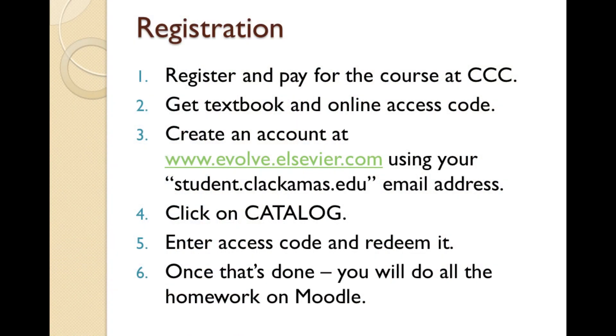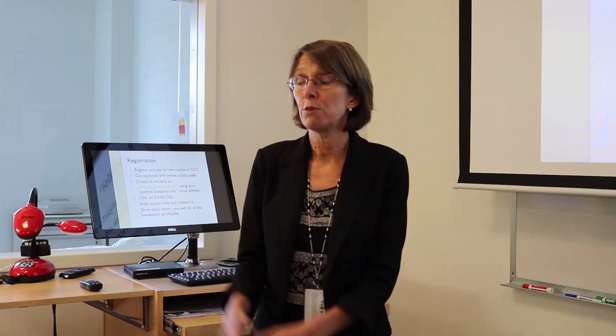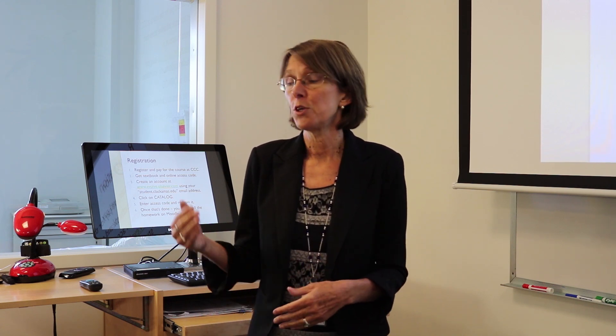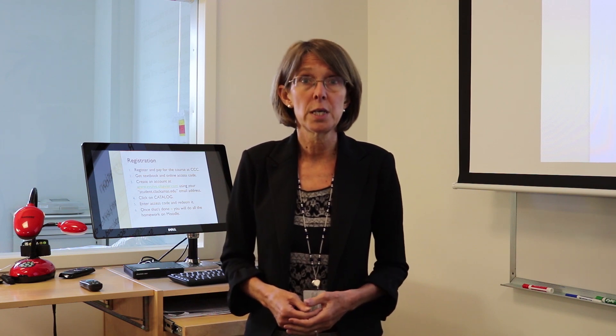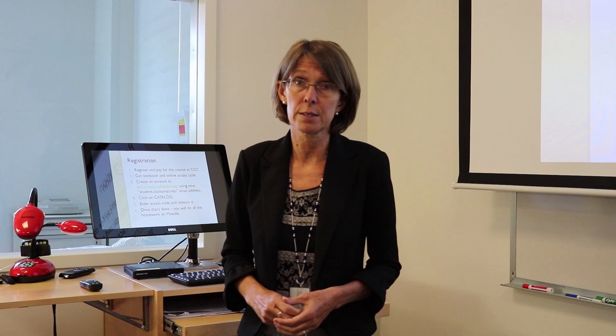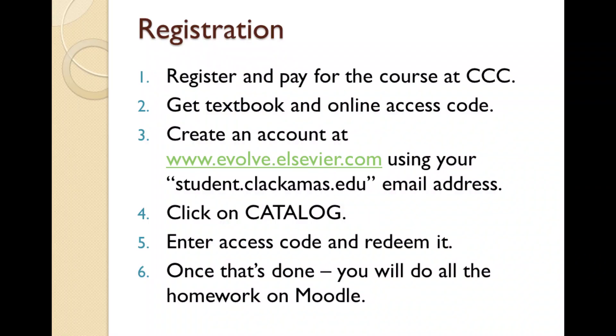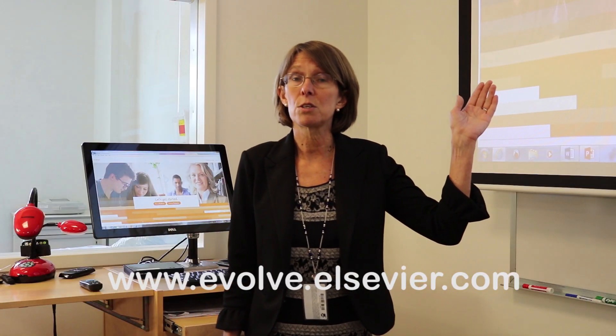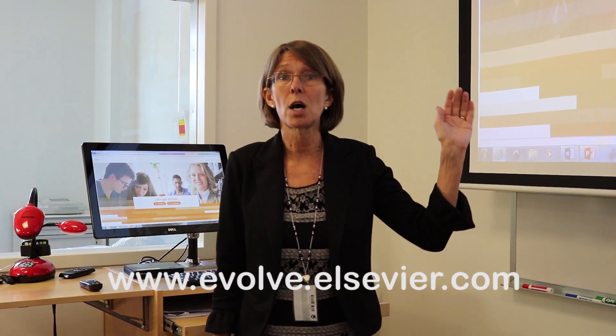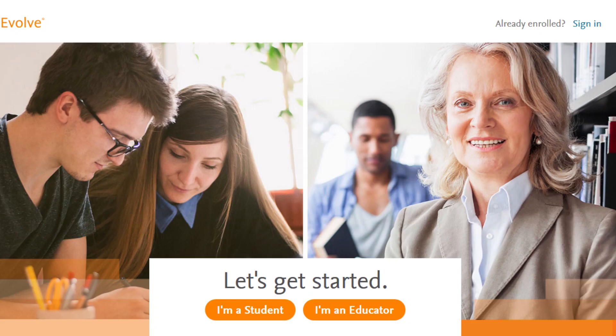Now we're going to go through the registration process. You've registered for the course at CCC, you have gotten your book and your access code, and now it's time to redeem your access code. The first step is to get to this website: www.evolve.elsevier.com. Once you're here, you're going to need to create an account. The key is to create an account using your student.clackamas.edu email address.